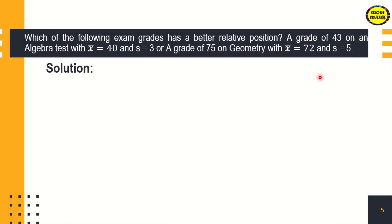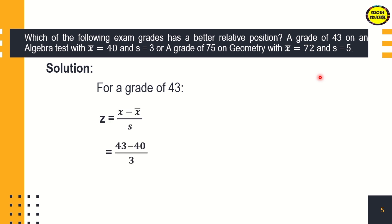Which of the following exam grades has a better relative position? A grade of 43 on an algebra test with a mean of 40 and a standard deviation of 3, or a grade of 75 on geometry with a mean of 72 and standard deviation of 5? To find which has a better relative position, we need to find the z-scores of both tests. For the algebra test with a grade of 43: 43 minus 40 divided by 3, the answer is 1. So the z-score for the algebra test is 1.